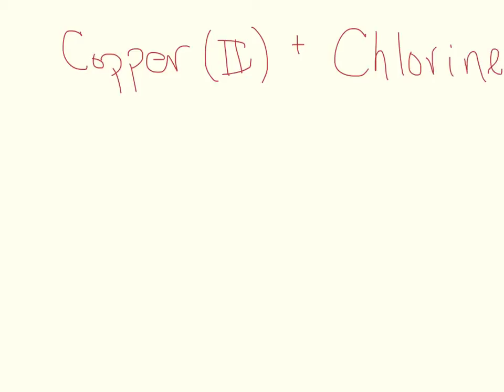So if I have a reaction between copper(II) and chlorine, I write my copper(II) as an ion. So that's Cu⁺². And chlorine as an ion, chlorine is a halogen so it has 7 valence electrons. It wants to gain 1 more so that means it's going to have a charge of negative 1.